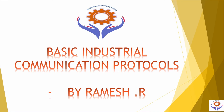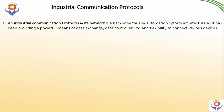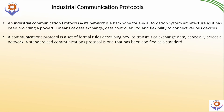Why is a communication protocol very important in any system? An industrial communication protocol and its network is a backbone of any automation system architecture because it provides a powerful means of data exchange, data controllability, and flexibility to connected variable systems or any devices. A communication protocol is a set of formal rules describing how to transmit or exchange data, especially across a network. A standard communication protocol is one that is codified as a standard.